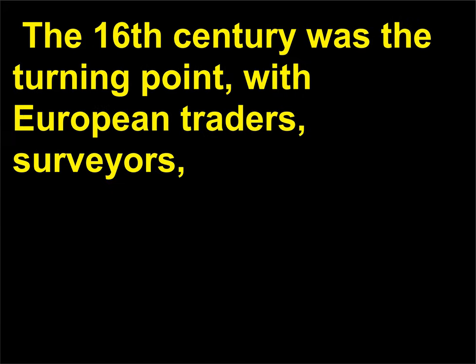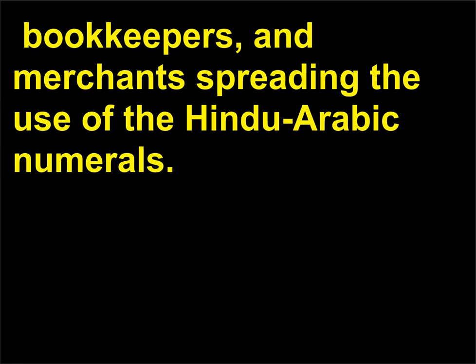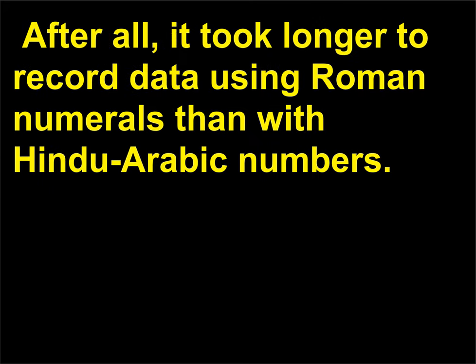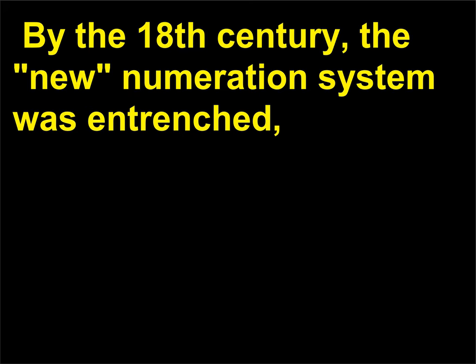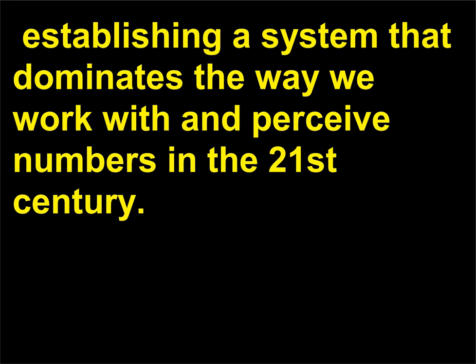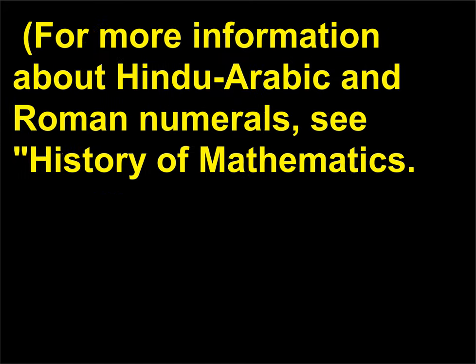The 16th century was the turning point, with European traders, surveyors, bookkeepers, and merchants spreading the use of Hindu-Arabic numerals. After all, it took longer to record data using Roman numerals than with Hindu-Arabic numbers. The advent of the printing press also helped by standardizing the way the Hindu-Arabic numbers looked. By the 18th century, the new numeration system was entrenched, establishing a system that dominates the way we work with and perceive numbers in the 21st century.